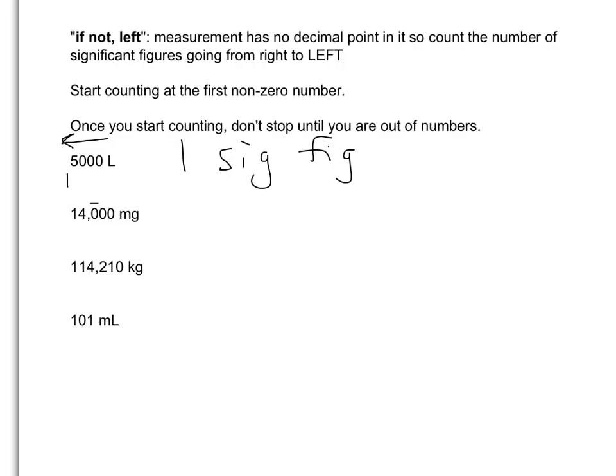In 14,000, you'll see something that looks a little curious — there's a bar over one of the zeros. There's still no decimal point, so we're still counting to the left. But that bar makes that zero significant, meaning it was measured. The zero in the ones place and the zero in the tens place were not measured — they're just holding place. But that zero with the bar over it means it's significant, giving us three significant figures in this measurement.